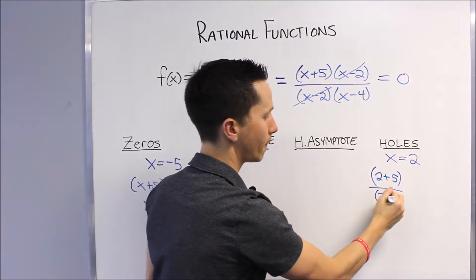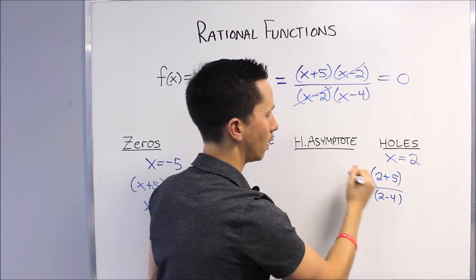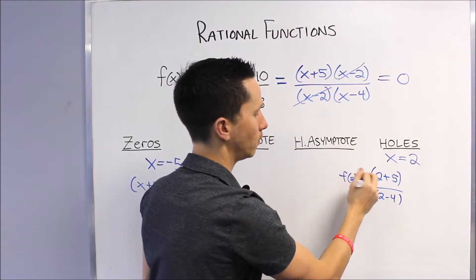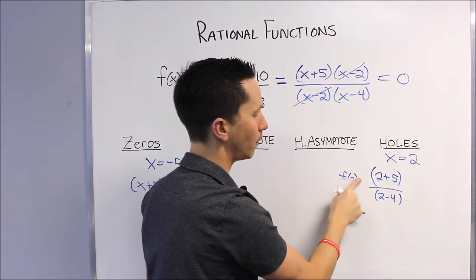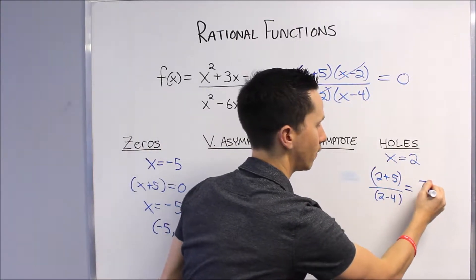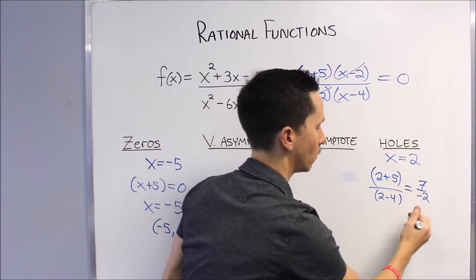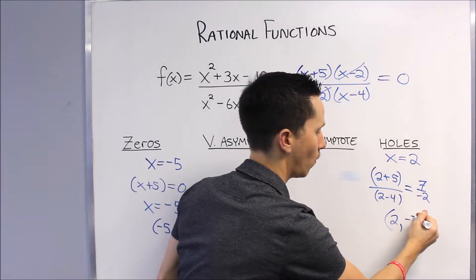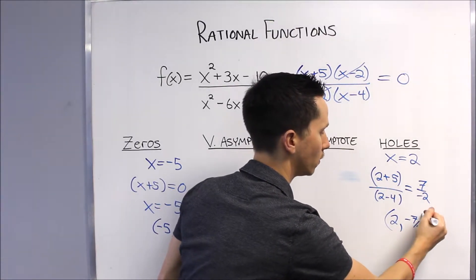That will be our f(2), or that would be f(2), so that will be the y-coordinate at our hole. And that's 7 over negative 2. So the coordinates of our hole are when x is 2 and y is negative 7/2.